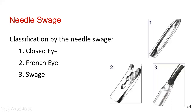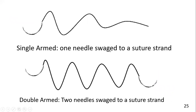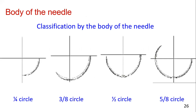اس میں manufacture کی طرف سے پہلے سے prepare آپ کو pack شکل میں ملتی ہے۔ اب دیکھیں single arm یعنی one needle attached to a suture strand، اور double arm یعنی two needles attached to a suture strand — دونوں طرف needle ہوتی ہے، درمیان میں thread ہوتا ہے۔ Single arm میں ایک needle ہوگی اور double arm میں دو needles ہوں گی۔